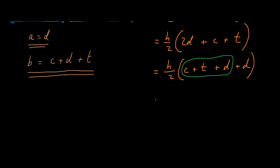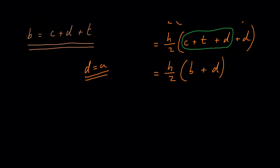So what we have here is H over 2 multiplied by B plus D. Now, D is actually A. So we can transform this formula into H over 2 multiplied by A plus B.